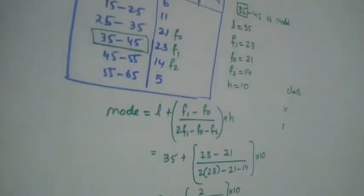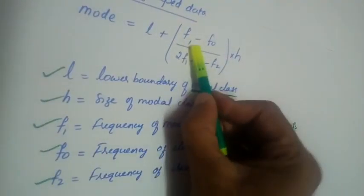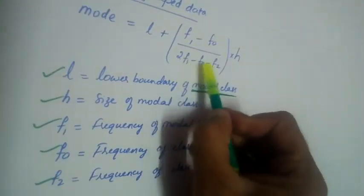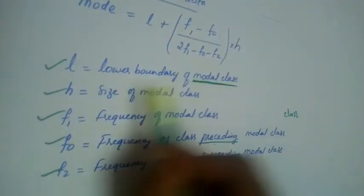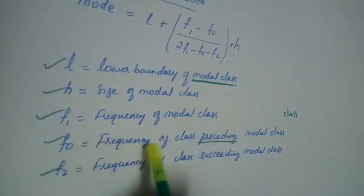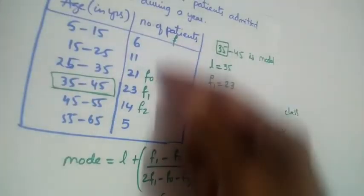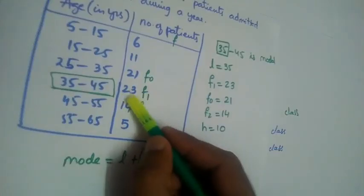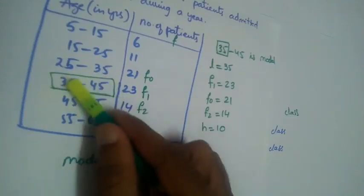I hope this is clear. Let us quickly revise. Mode equals L plus F1 minus F0, divided by 2F1 minus F0 minus F2, multiplied by H. L is the lower boundary of the modal class, H is the size of the modal class, F1 is the frequency of the modal class, F0 is the frequency of the preceding class, and F2 is the frequency of the succeeding class. To find the modal class, check for the highest frequency — in this case 23, whose class is 35 to 45.